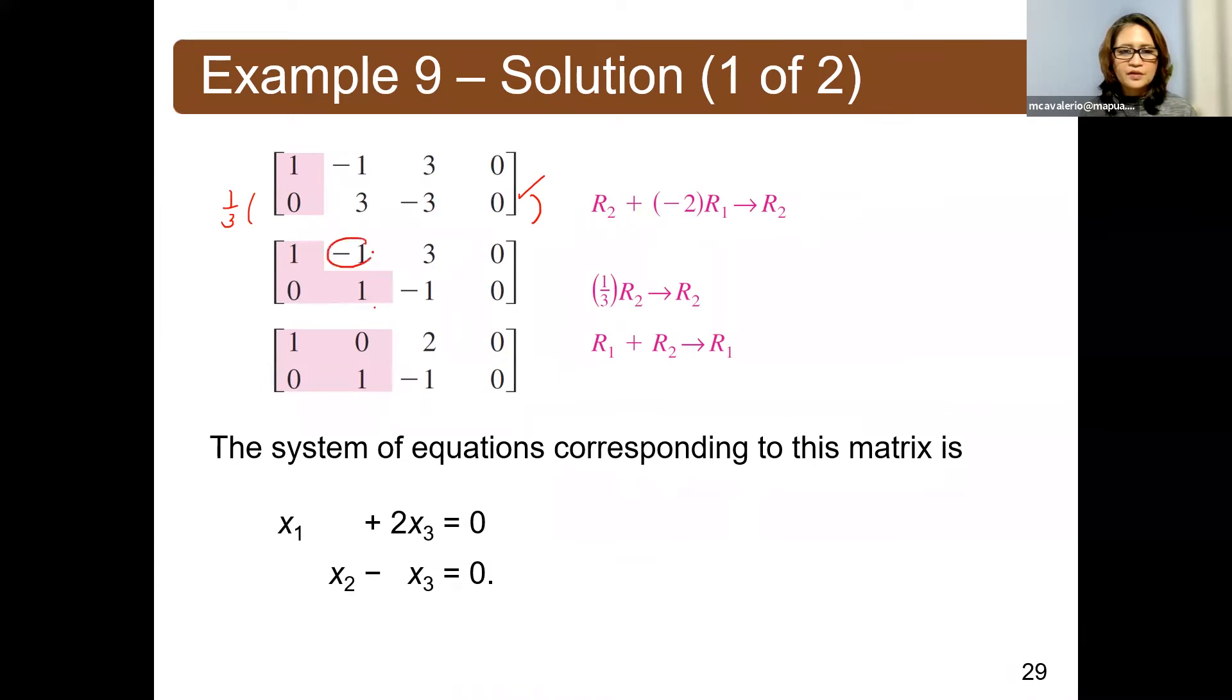So we need to convert this to 0, by adding rho 1 with rho 2, to be the new rho 1. So we have 0 plus 1 is still 1, and then 1 plus negative 1, that will be 0, negative 1 plus 3, that will be 2, and then 0. So you'll have 1, 0, 2, 0, and then 0, 1, negative 1, 0.